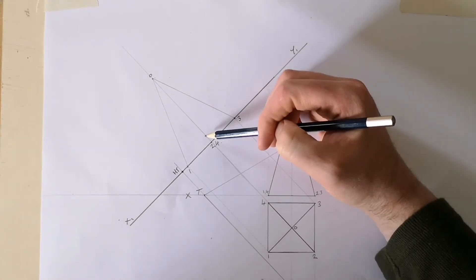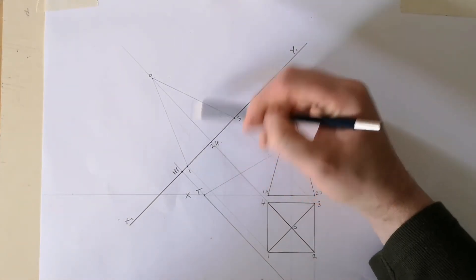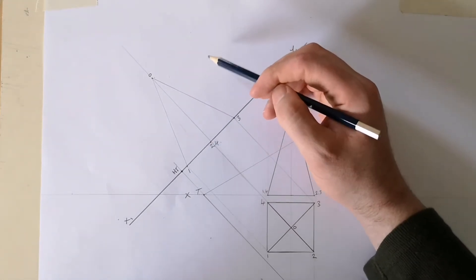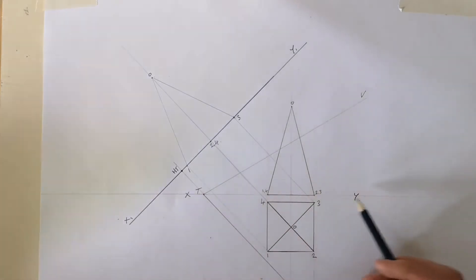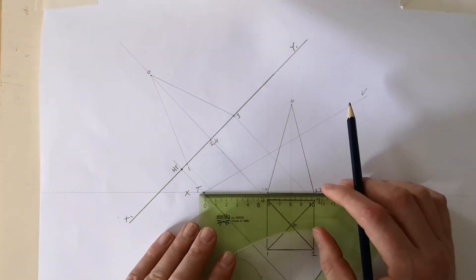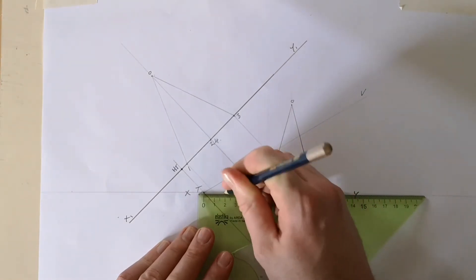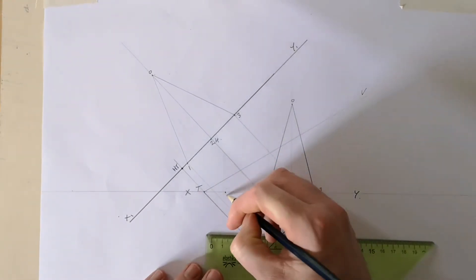What we need to do now is put in the plane that cuts through our pyramid up in this auxiliary view. So on my XY line here, from T, I'm going to measure out a very simple distance of 20 millimeters. I'll call it point P there.